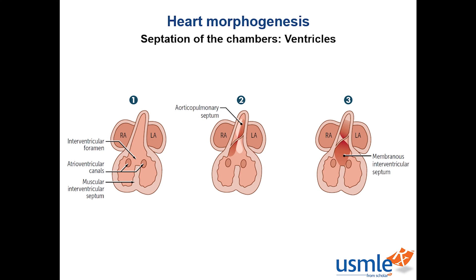On to septation of the ventricles, which is much simpler. The two developing ventricles have a medial muscular wall which forms the muscular interventricular septum. As the interventricular septum forms, it creates a communication between the two chambers called the interventricular foramen. We close off this communication via the endocardial cushion and the aorticopulmonary septum, which sends a membranous sheet of tissue downwards — forming the membranous interventricular septum. Since these are separate processes, you can have membranous or muscular defects, with membranous defects being the most common. After birth, you'd have shunting from the left to right — a left-to-right shunt.